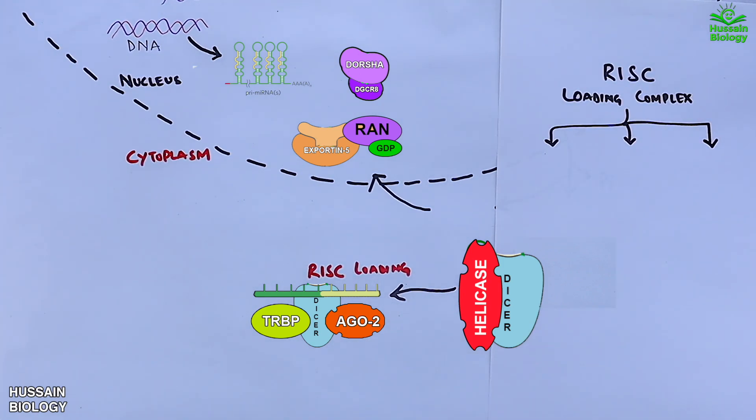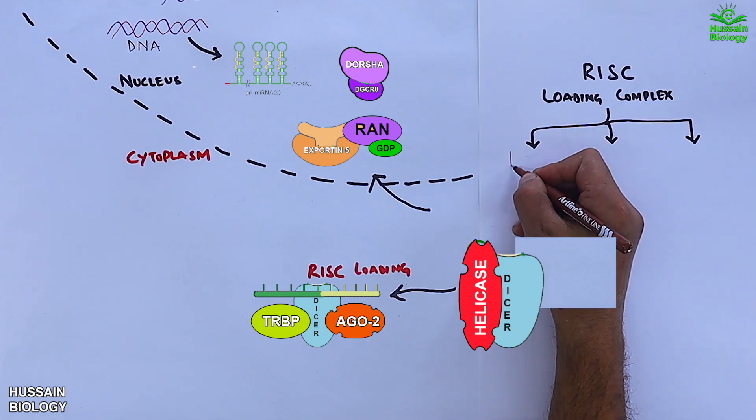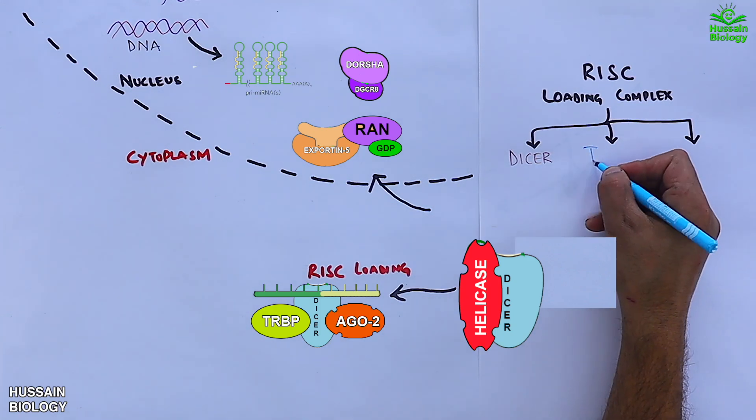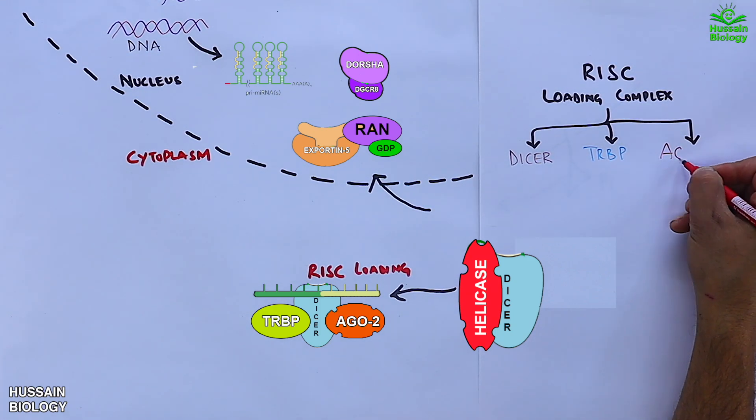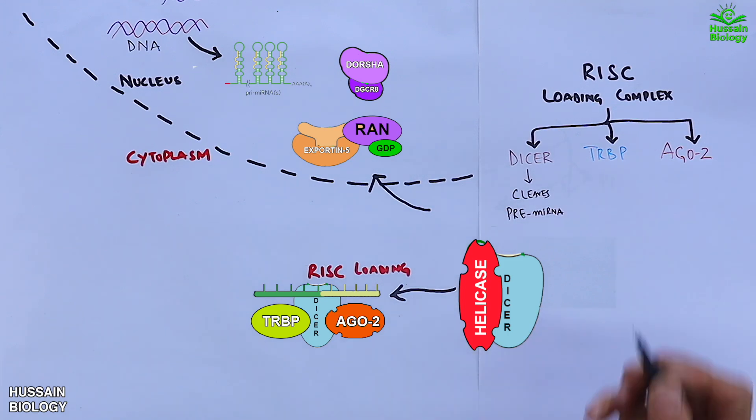Here we have the RISC complex. It has three important structures: DICER, TRBP protein, and AGO2 protein. The DICER cleaves the precursor miRNA.